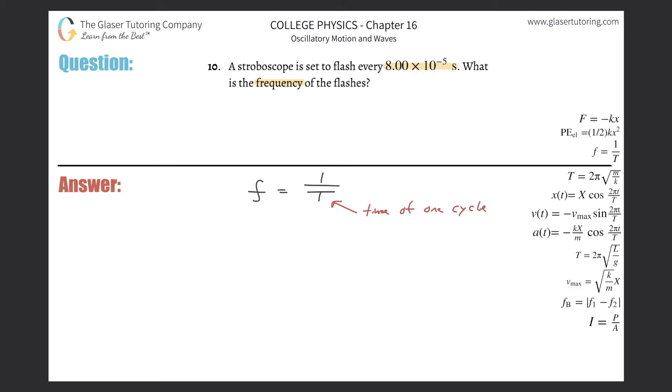Right, time it takes for one flash, you can call it, or one oscillation, or one wave. I mean, this term could be generalized to a bunch of things. So what do they tell you here? It said it's set to flash every 8 times 10 to the minus 5 seconds. That sounds like one cycle of this stroboscope, right?